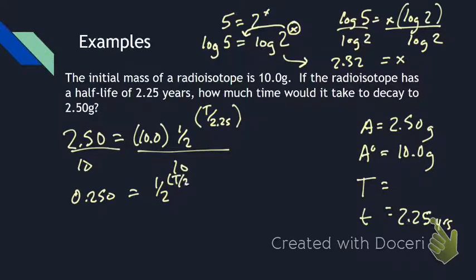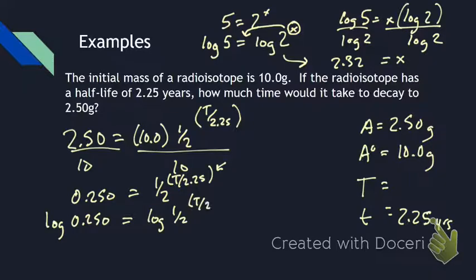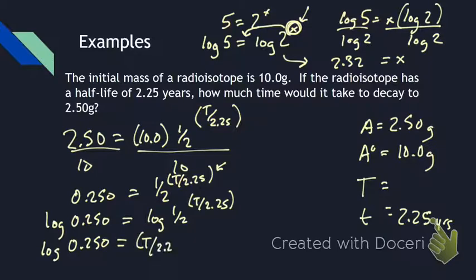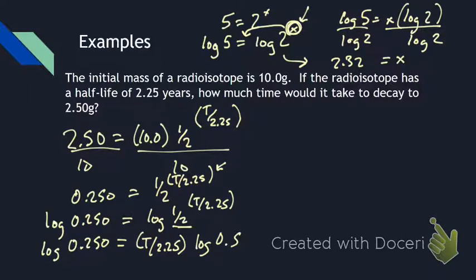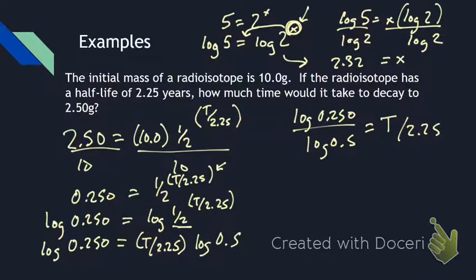Now we have to use logs because we're solving for an exponent. Taking the log of both sides: log 0.250 equals log of one-half to the power of T over 2.25. Using the power rule, we move the exponent to the front: log 0.250 equals T over 2.25 times log 0.5. Then we divide both sides by log 0.5, giving us log 0.250 over log 0.5 equals T over 2.25.